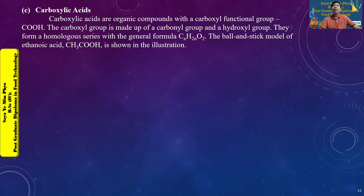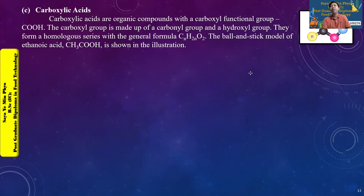If you have a homologous series with a general formula CnH2nO2, you have a model that uses RCH3 and RCOOH representations.